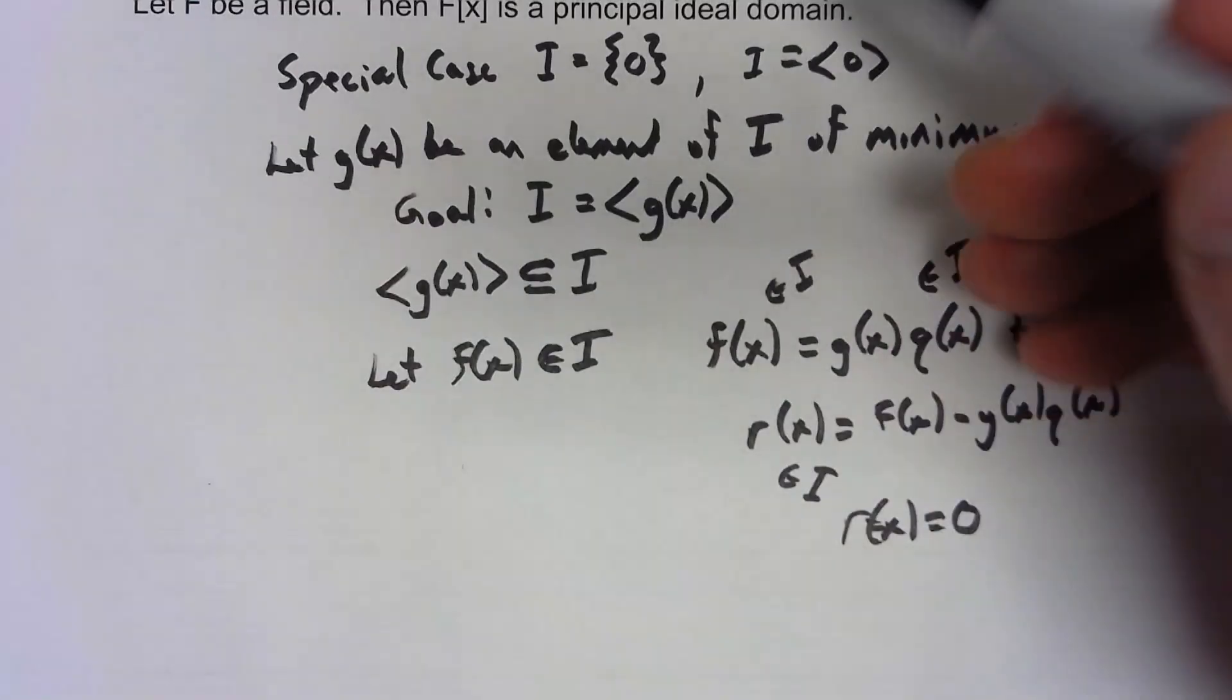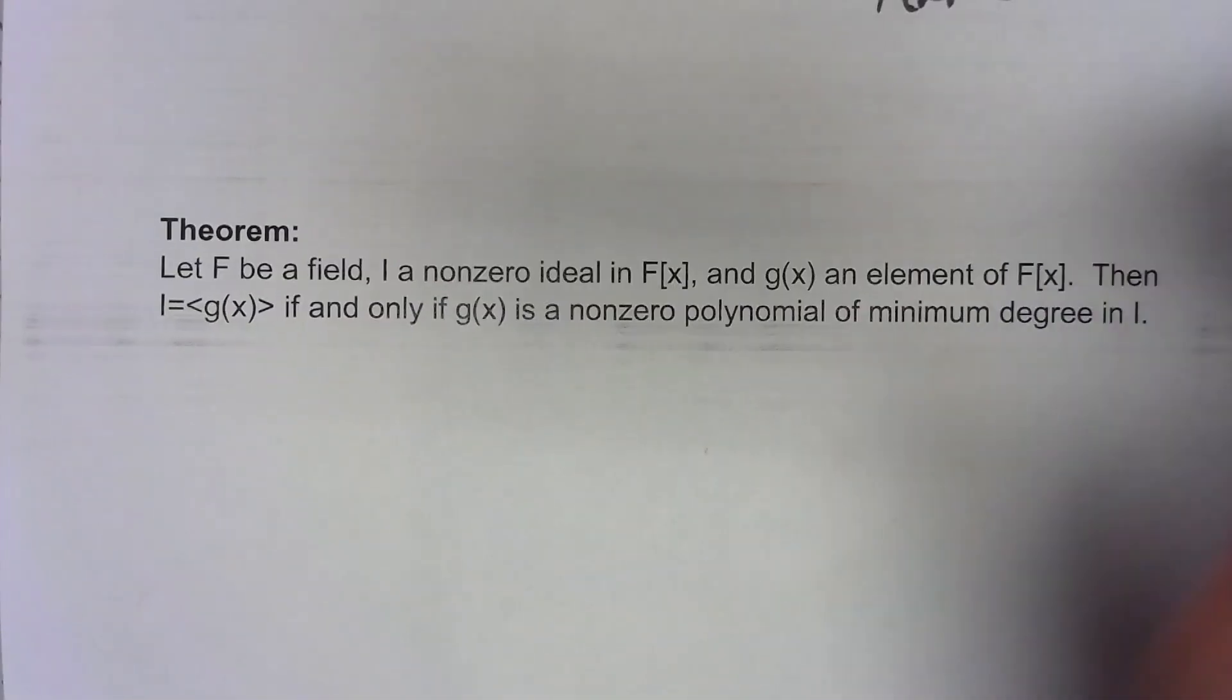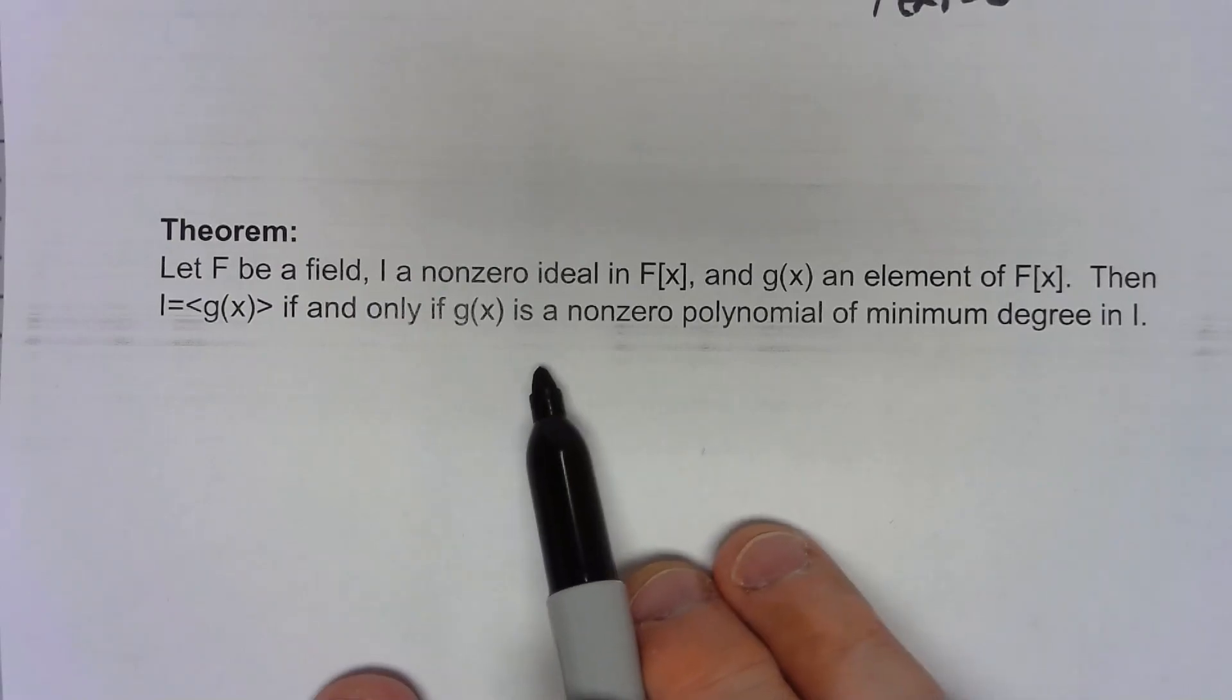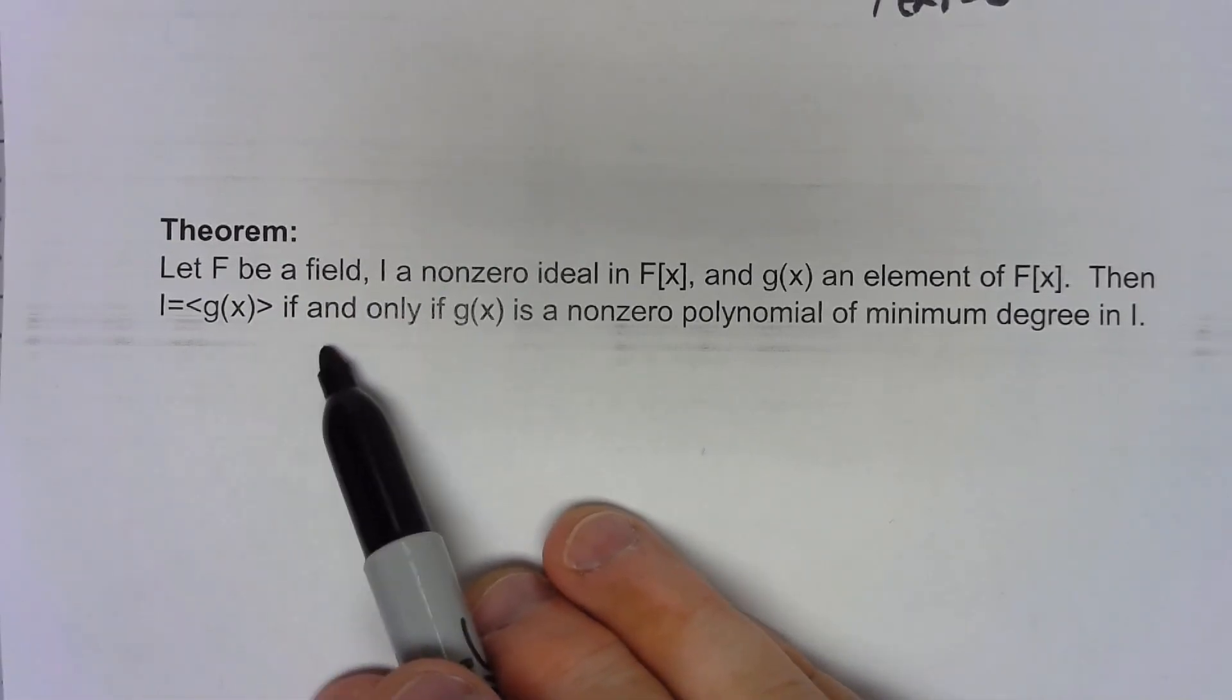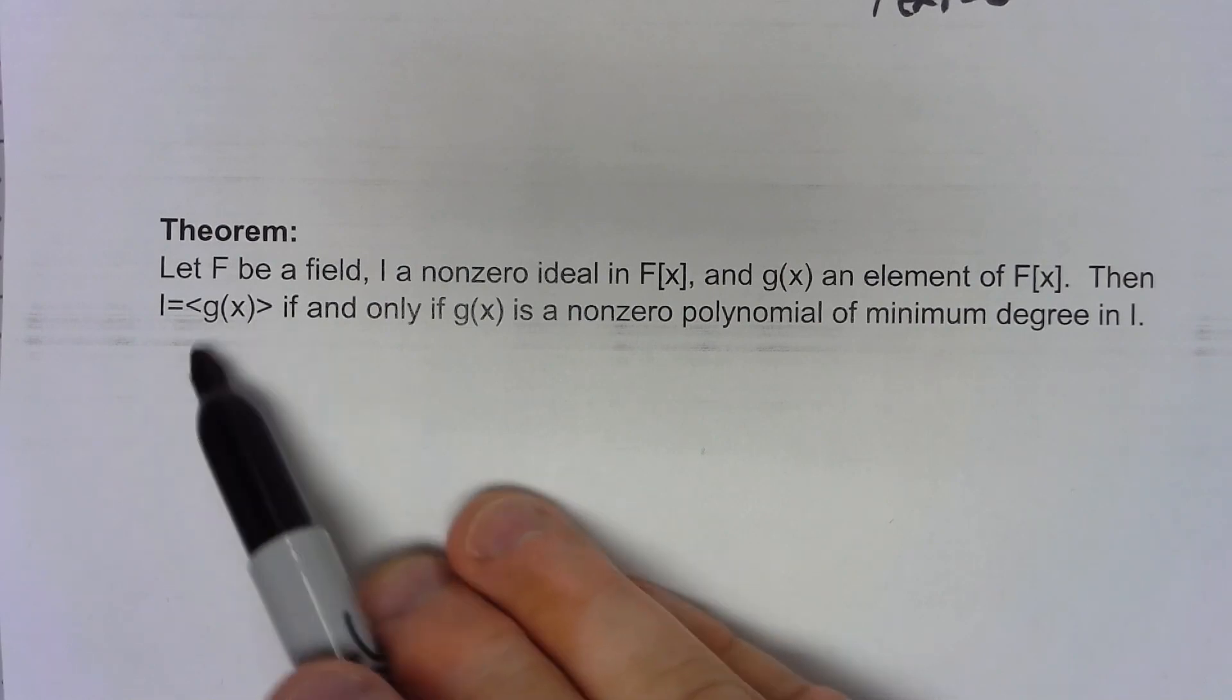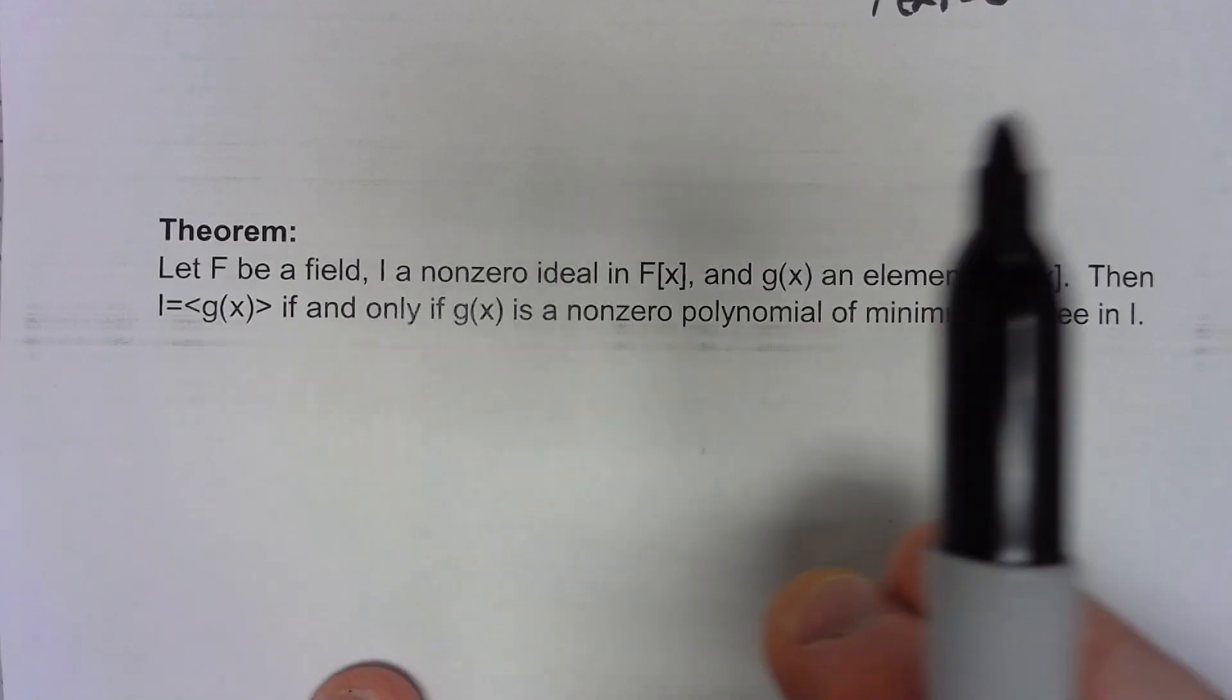That doesn't follow from this theorem, but it follows from our proof of it. So really what it is, for any ideal, a polynomial of minimum degree in that ideal will always generate that ideal.